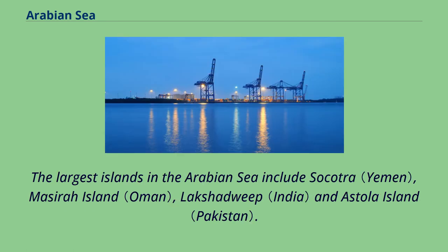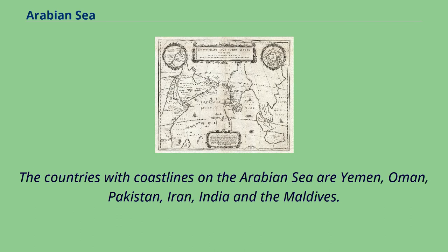The largest islands in the Arabian Sea include Socotra, Masaira Island, Lakshadweep, and Astola Island. The countries with coastlines on the Arabian Sea are Yemen, Oman, Pakistan, Iran, India, and the Maldives.